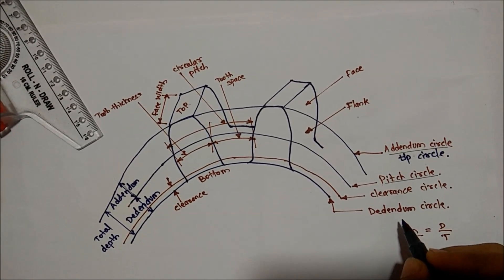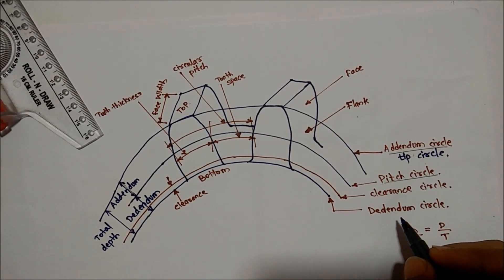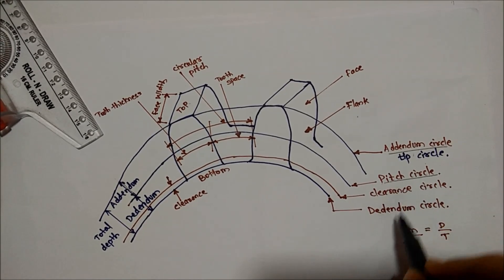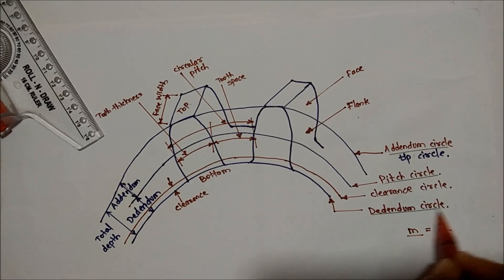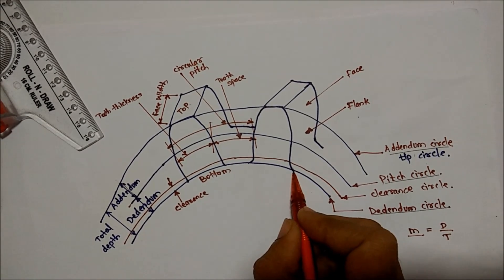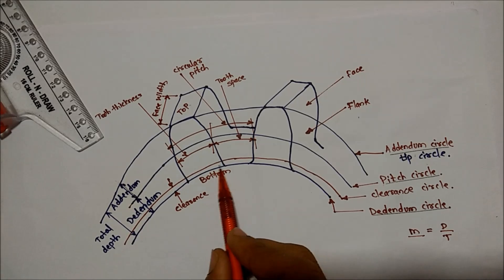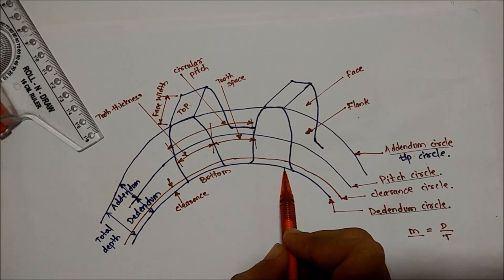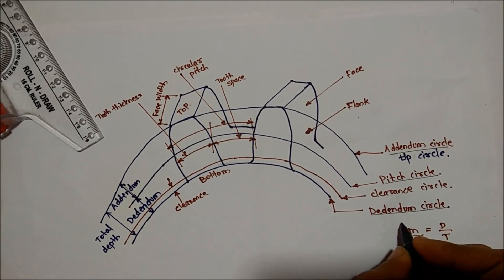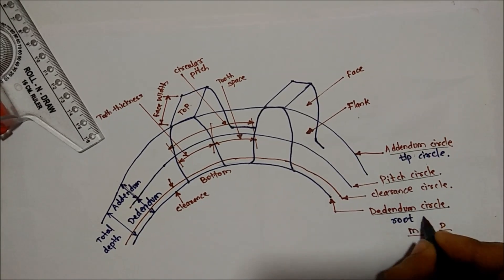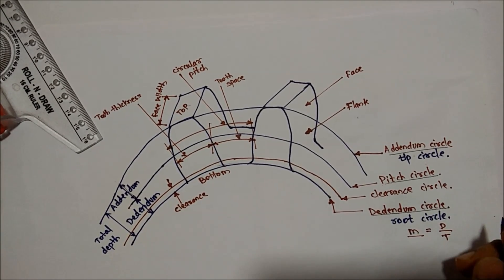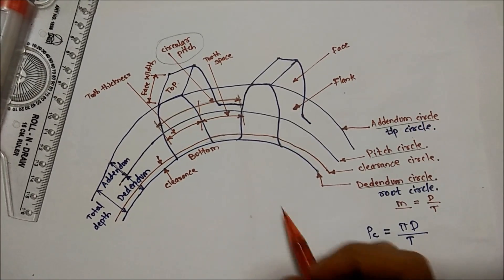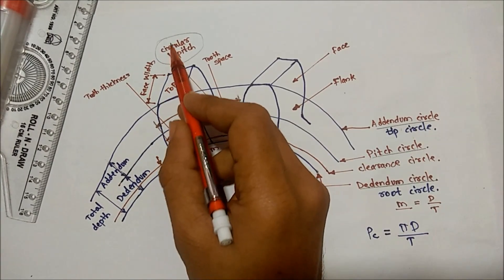The dedendum circle is drawn through the bottom of the teeth and is also called the root circle. Next, circular pitch.